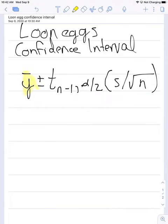We need to know what y bar is, that is the sample mean. We need to know what the value of t is, that is for n minus 1 degrees of freedom with alpha divided by 2, our level of significance.